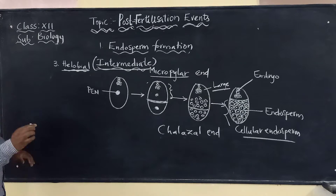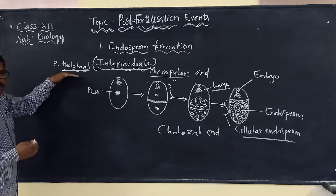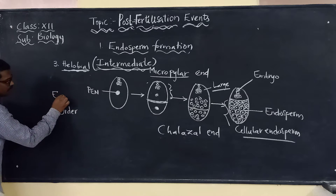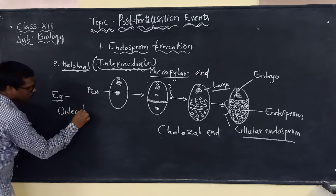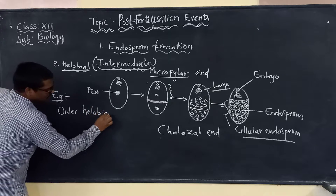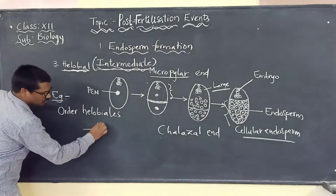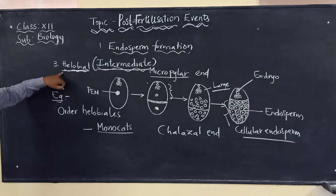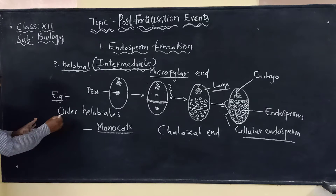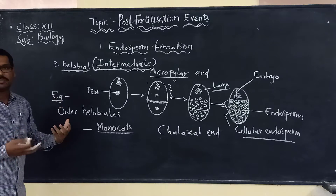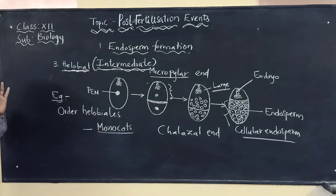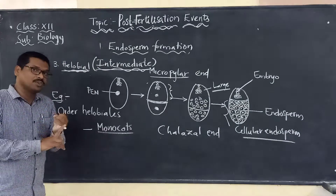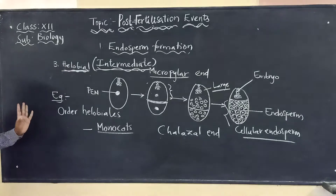Helobial endosperm is found in the order Hellobiales, which are especially monocots. So helobial endosperm is characteristic of monocots. To summarize, based on mode of formation, the three types of endosperm are: nuclear, cellular, and helobial.